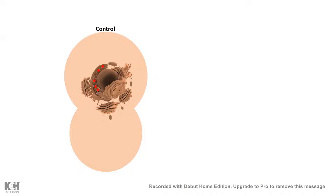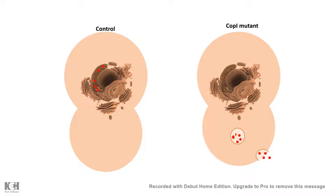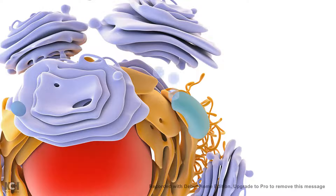In normal conditions, ER resident proteins are mainly found in the endoplasmic reticulum. However, in yeast mutants with mutations in COP1 alpha and COP1 beta, ER resident proteins are not retained inside the ER and are instead secreted out. This tells us that retrograde transport from the trans-Golgi network to the endoplasmic reticulum involves COP1 — this whole backward transport of ER resident proteins involves COP1-mediated vesicular transport.